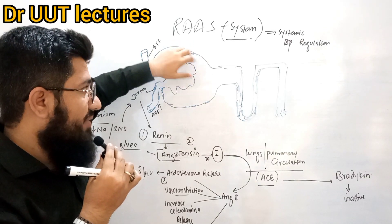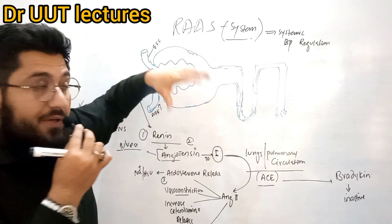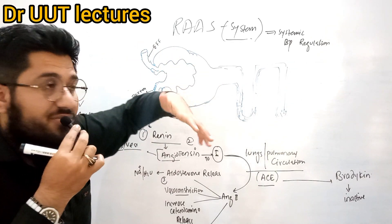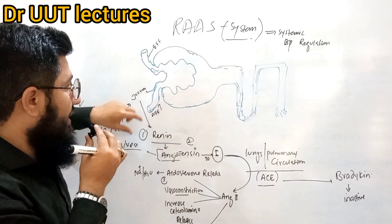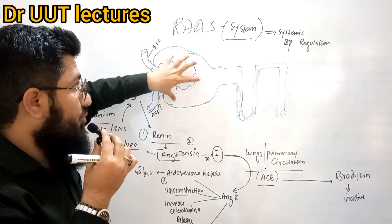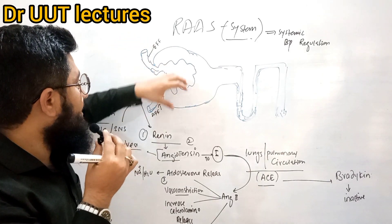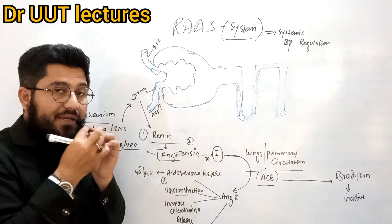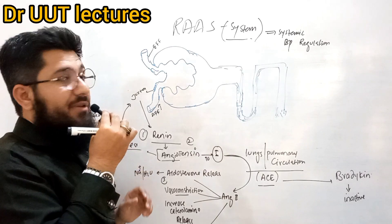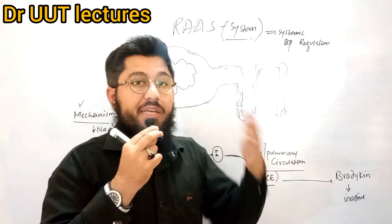The nephron begins with Bowman's capsule, where there is actually a glomerulus. The very important structures for today's discussion are the afferent arterioles — the blood vessels supplying blood to the Bowman's capsule — and the efferent arterioles, which carry blood away from the capsule.